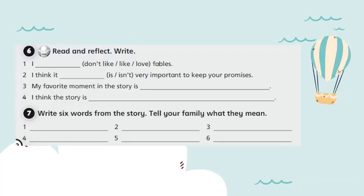For this last one, it's a Read and Reflect exercise, so it's your personal opinion. Number one: what do you think about fables — do you like, love, or not like them? Number two: I think it is, or I think it isn't, very important to keep your promises. Number three: my favorite moment of the story is... Number four: I think the story is — give me an adjective like interesting, nice, boring, or funny. And number seven: write six words that you learned today while reading our story.